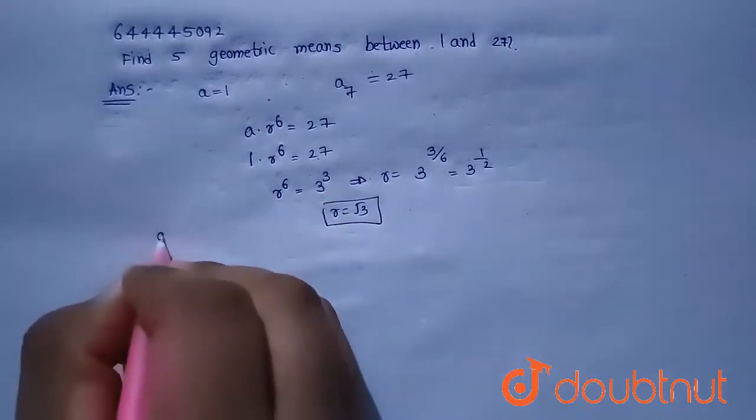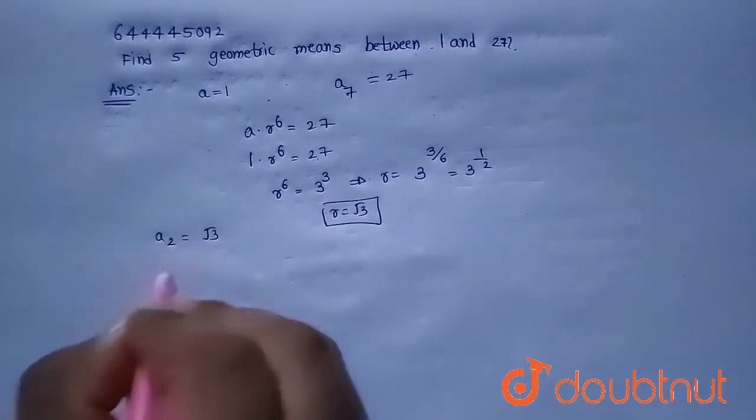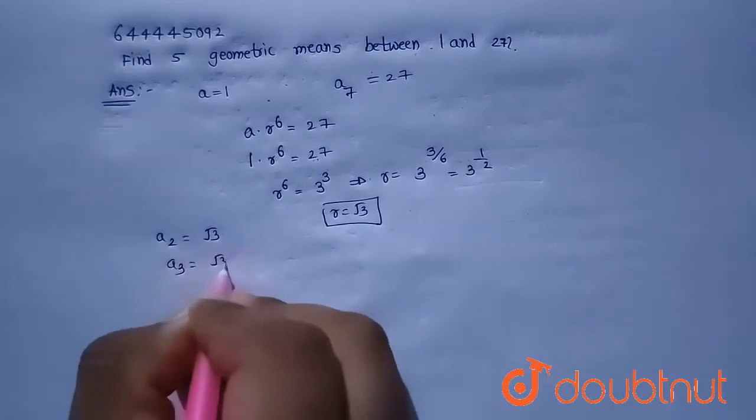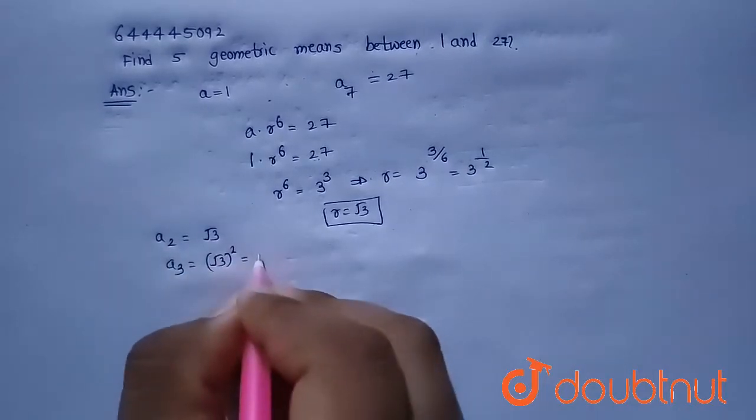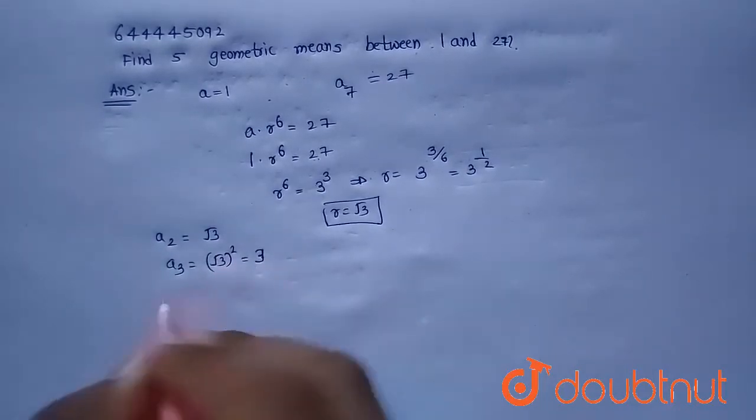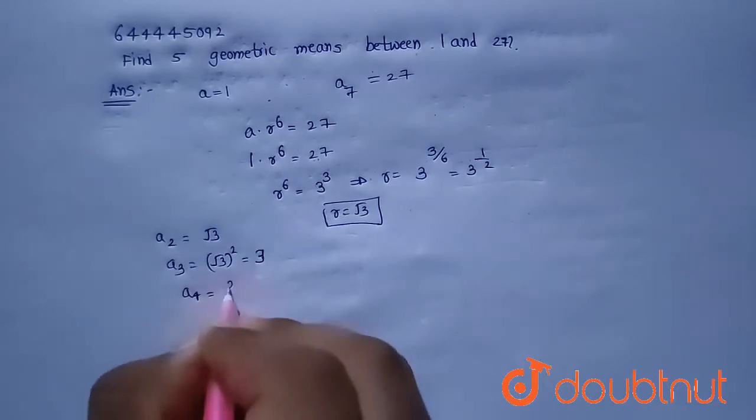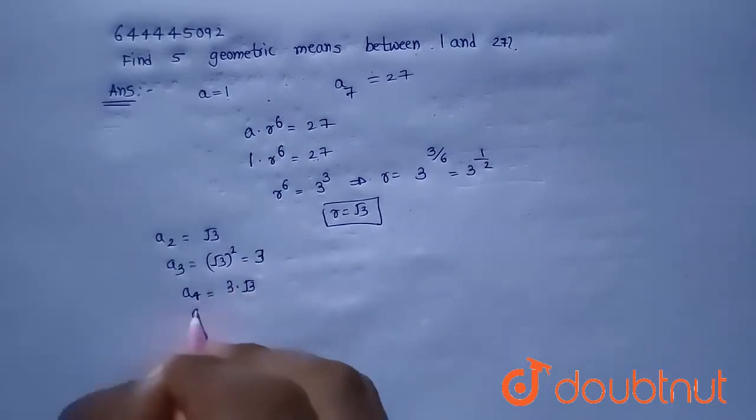So the second term will be √3, and the third term will be √3 × √3 = (√3)² = 3. And a₄ will be 3 × √3 = 3√3.